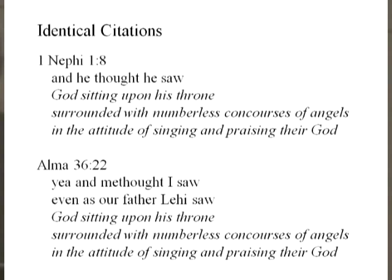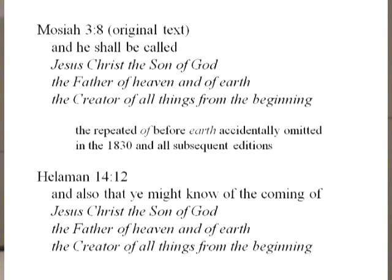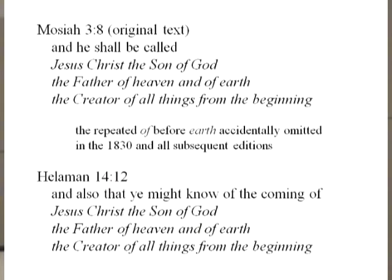There are also identical citations. A well-known example: language in 1 Nephi compared with Alma 36 is precisely the same wording. If Joseph Smith is getting ideas, whatever the process, something is ensuring he gets the words down exactly right. Another textually interesting case is a liturgical statement — 'Jesus Christ, the Son of God, the Father of Heaven and of Earth, the Creator of all things from the beginning' — which appears twice. In the original text, the first instance has 'of' before Earth, but it was accidentally dropped by the 1830 printer, so now in the text they're not identical — but they originally were.